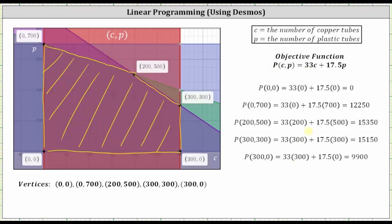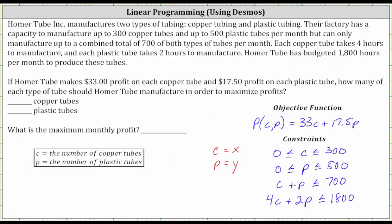The largest profit is $15,350, and this occurs when C, the number of copper tubes, is 200 and p, the number of plastic tubes, is 500. To maximize profits, the company should produce 200 copper tubes and 500 plastic tubes for a maximum profit of $15,350.